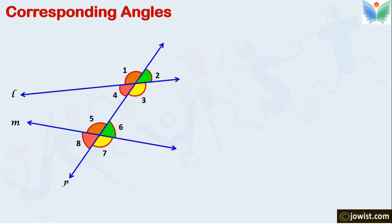Now let's identify the corresponding angles. Just take the upper part of lines L and M. Then take the left part of transversal P. The common angles 1 and 5 are corresponding angles. Similarly from the upper parts.